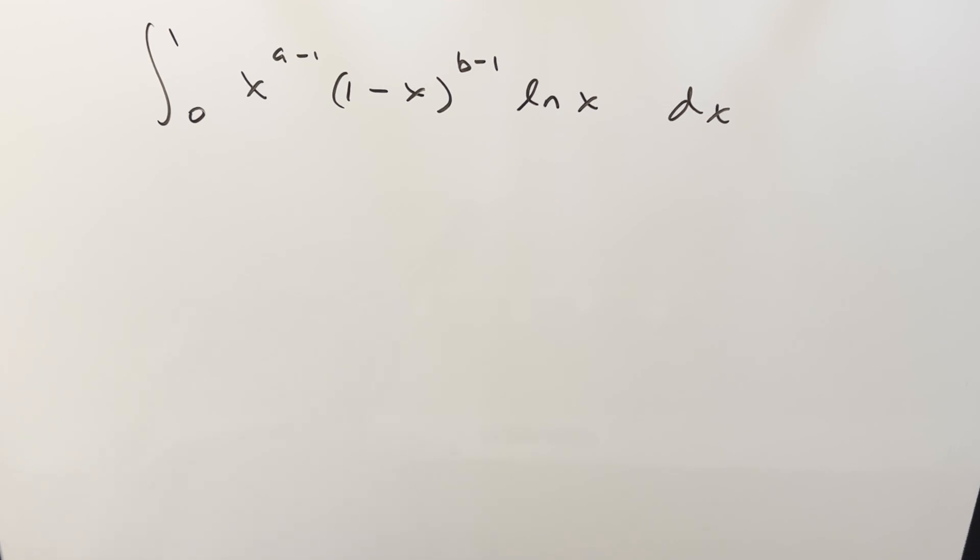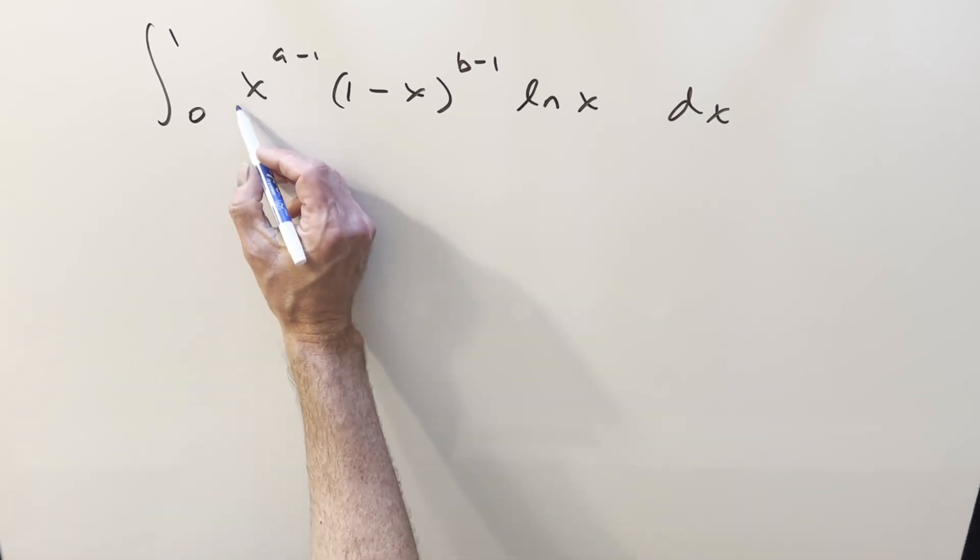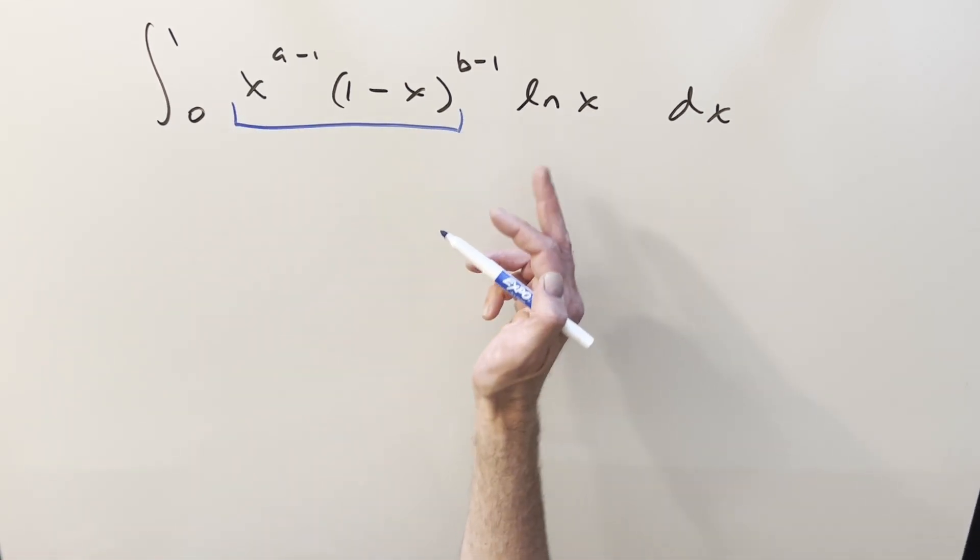Okay, we have here an integral on the board. We've got the integral from 0 to 1, x to the a minus 1, times 1 minus x, b minus 1, ln x, dx. And I want to derive a general formula for this. You'll notice we have this similarity here to the beta function, but we're multiplying in natural log x. And I'm going to do some more problems on this. I'll do some actual examples later on, but right now I just want to derive the formula for this thing here.